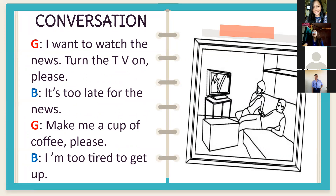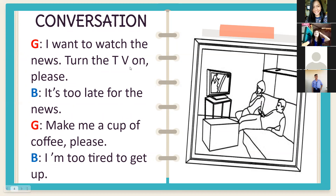Russell, please read again. Girl: 'I want to watch the news. Turn the TV on, please.' Boy: 'It's too late for the news.' Girl: 'Make me a cup of coffee, please.' Boy: 'I'm too tired to get up.' You can see the word 'too' is used again. The girl keeps asking her boyfriend, but the boy keeps declining her requests using 'too' plus adjective or 'too' plus adverb.